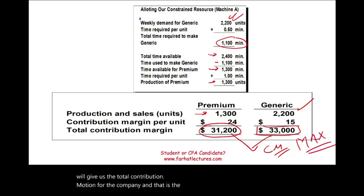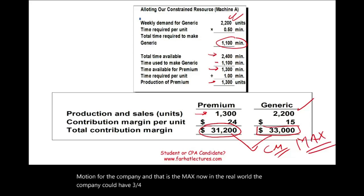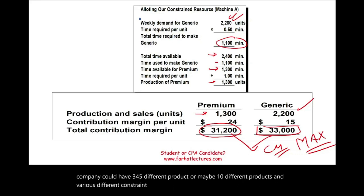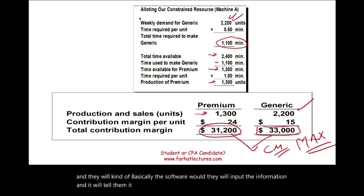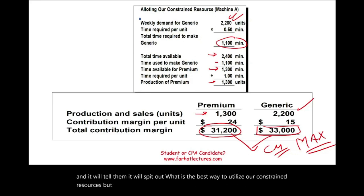In the real world, a company could have three, four, five, or even ten different products and various constraint resources. To handle this complexity, companies use software — they input the information and the software determines the best way to utilize constrained resources. This example is to get you familiar with the concept, which is all you need as a student or CPA candidate.